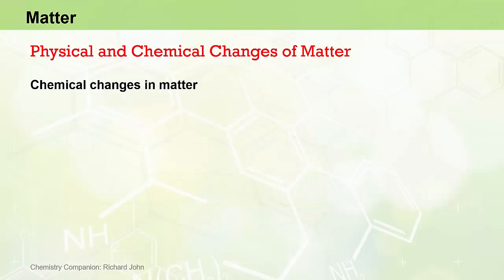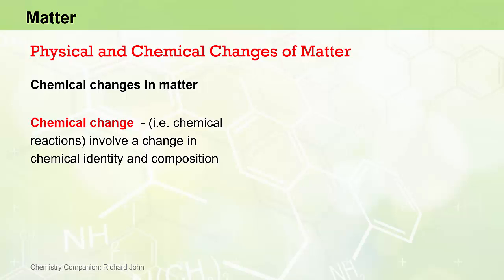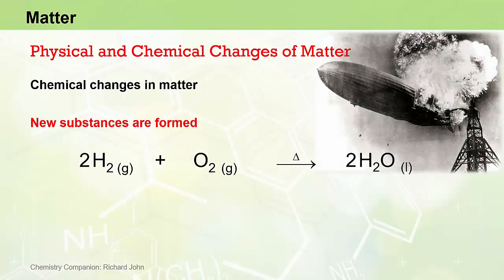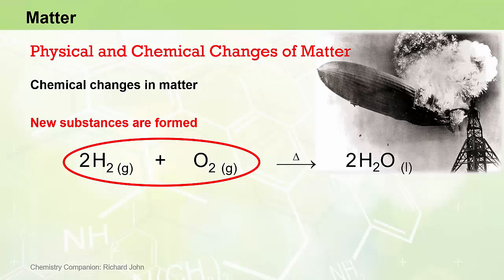As far as chemical changes in matter are concerned, a chemical change, otherwise known as a chemical reaction, involves a change in the chemical identity or chemical composition and one or more new types of matter are formed from other types of matter. And that's the key here - new substances are being formed. Here we have an example of a chemical equation representing a chemical reaction, namely the combustion of hydrogen in the presence of oxygen to produce water. In this case, two kinds of matter, hydrogen gas and oxygen gas, are transformed into a single new kind of matter, water.